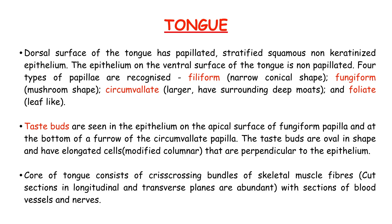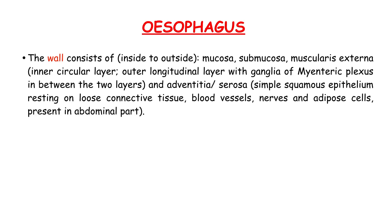Esophagus: the wall consists of, from inside to outside, mucosa, submucosa, muscularis externa — which has an inner circular layer and outer longitudinal layer with ganglia of the myenteric plexus in between the two layers — and adventitia or serosa, which is a simple squamous epithelium resting on loose connective tissue, with blood vessels, nerves, and adipose cells present in the abdominal part.